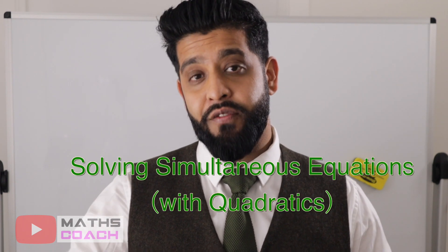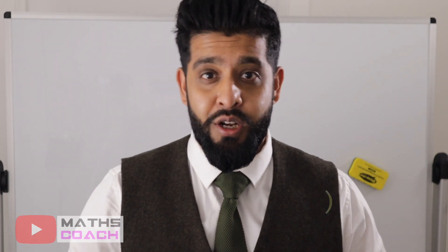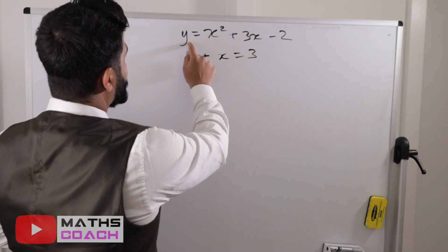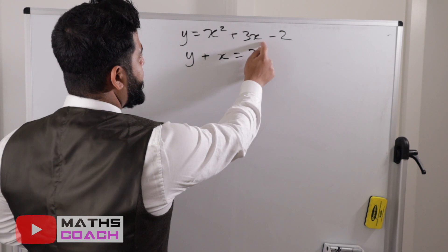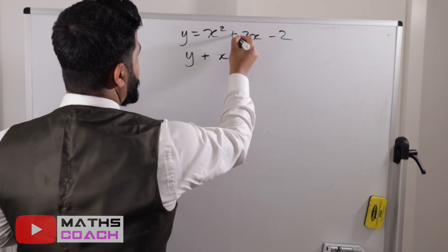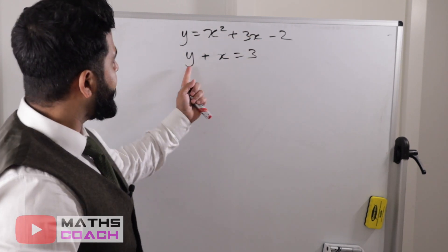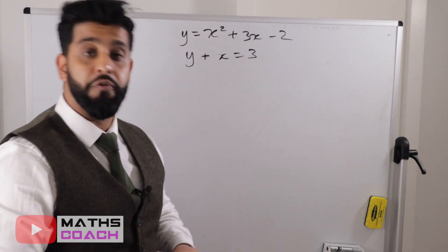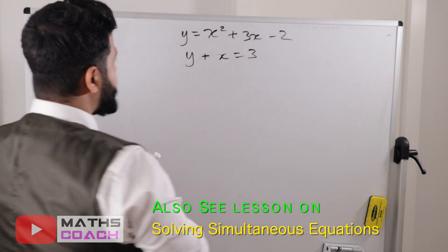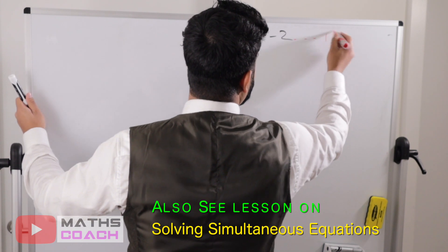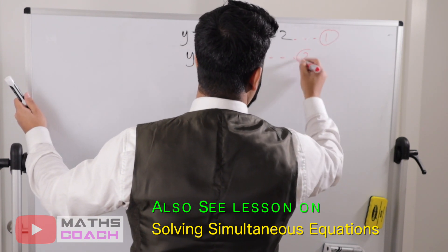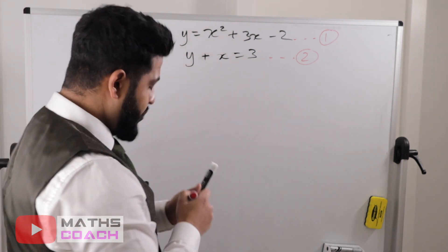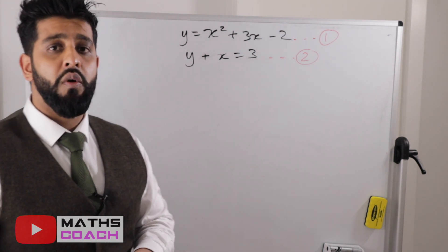By the end of today's lesson you will be able to solve simultaneous equations where you have one linear and one quadratic. So on to our first question. Our quadratic is y equals x squared plus 3x minus 2, and our linear equation is y plus x equals 3. As before, good practice — we are labelling our equations.